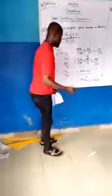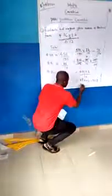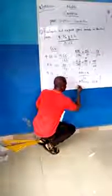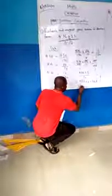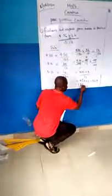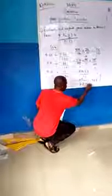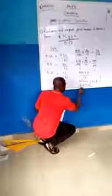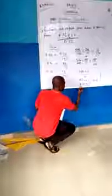To convert to standard form, bring the decimal point after the first digit and count how many places you have moved it. If you move the point to after the first digit, you will have moved it twice. So the answer will now be 1.368 times 10 to the power 2. That is the final answer for the first question.